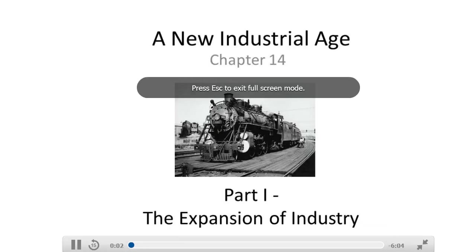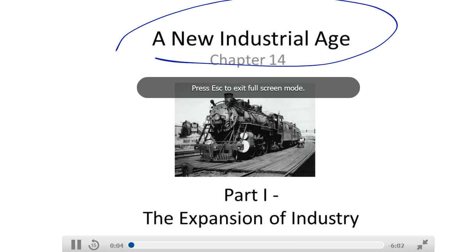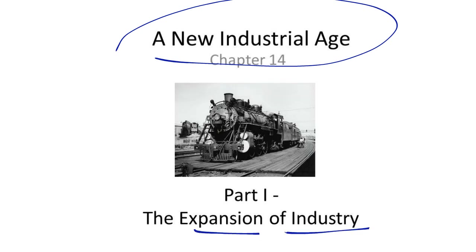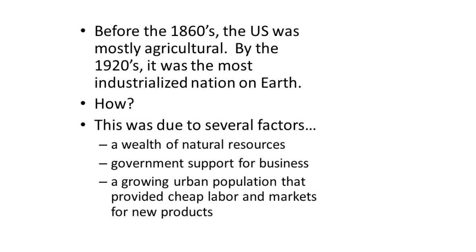In this video lesson, we'll discuss the New Industrial Age and the expansion of American industry. Before the 1860s, the U.S. was mostly agricultural and mostly farmers. By the 1920s, it was the most industrialized nation on earth. How did it become the most industrialized nation on earth?